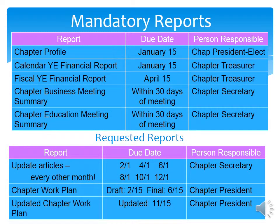Here is a list of the mandatory and requested reports. The profile which lists the chapter officers for the new year is due by January 15th. The financial reports must be submitted by the due dates. The calendar year-end report is also due January 15th, and the fiscal year-end report is due April 15th. All meeting reports must be submitted within 30 days of the meeting. The good news is that ANNA has made it so easy to submit these reports.